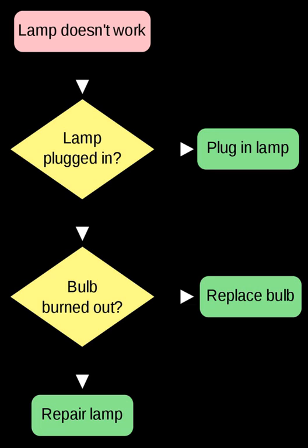Starvation is normally caused by deadlock in that it causes a process to freeze. Two or more processes become deadlocked when each of them is doing nothing while waiting for a resource occupied by another program in the same set. On the other hand, a process is in starvation when it is waiting for a resource that is continuously given to other processes.